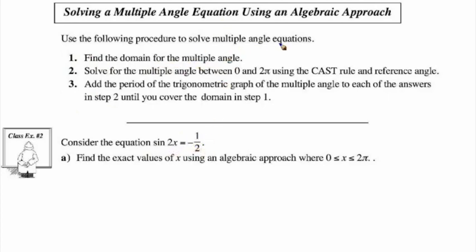We're going to find the domain of the multiple angle. If we're looking for x's between 0 and 2pi, then the 2x range is found by multiplying each bound by 2. So this goes from 0 all the way to 4pi. We're taking all the answers for 2x up to 4pi so that when we take half of them, we find the x's within 0 to 2pi.